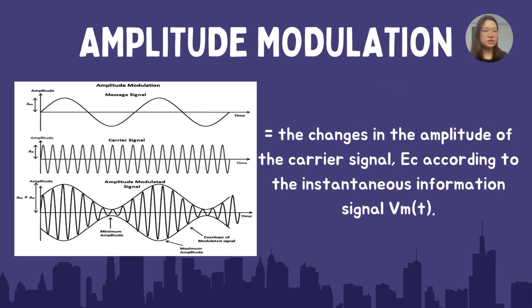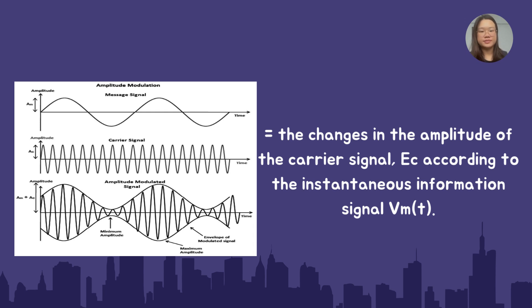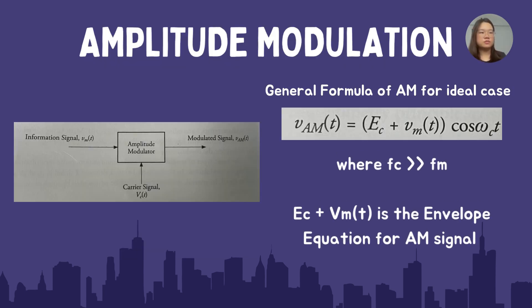Amplitude modulation is the changes in the amplitude of the carrier signal EC, according to the instantaneous information signal, which we know as V(t). And now I'm going to explain about the general formula for amplitude modulation for the ideal case, which phase is equal to zero.